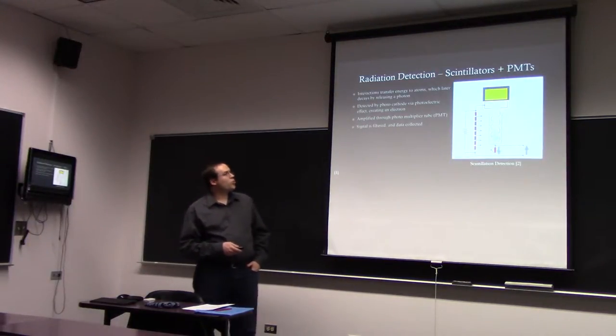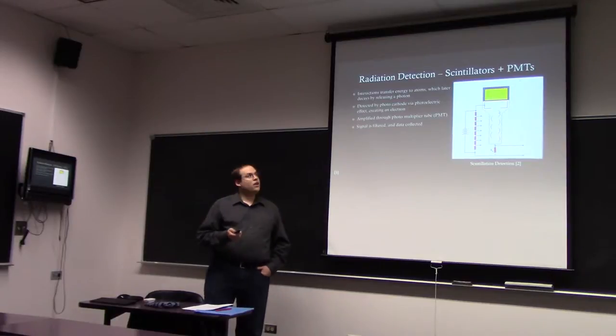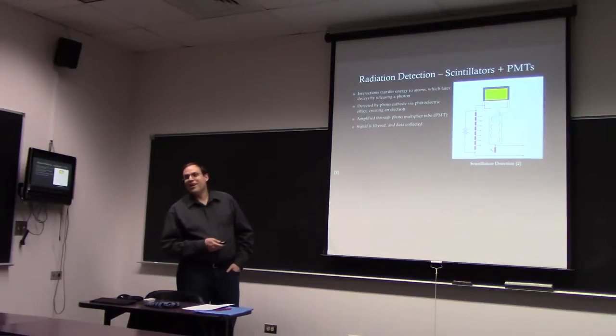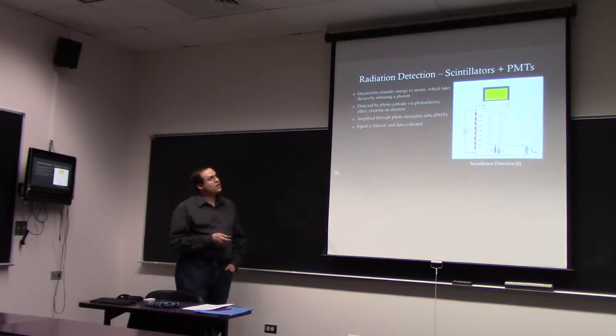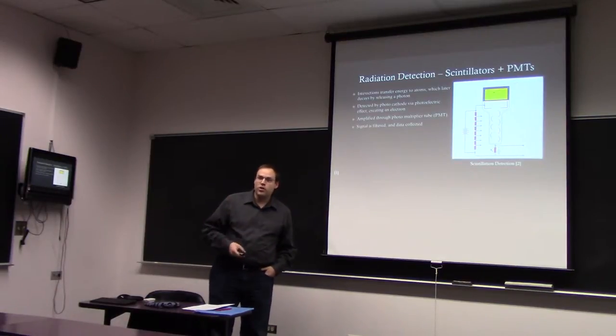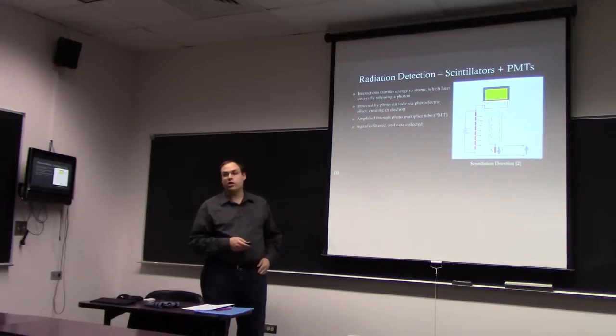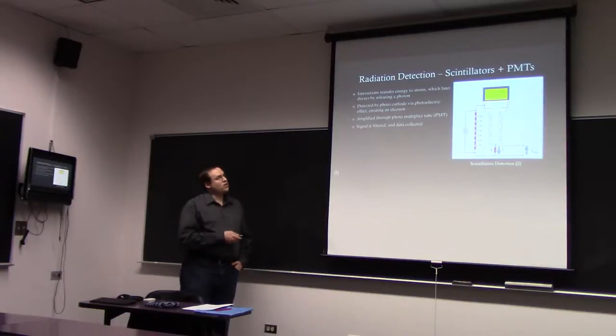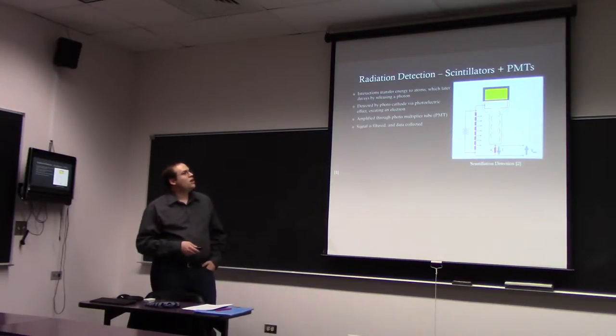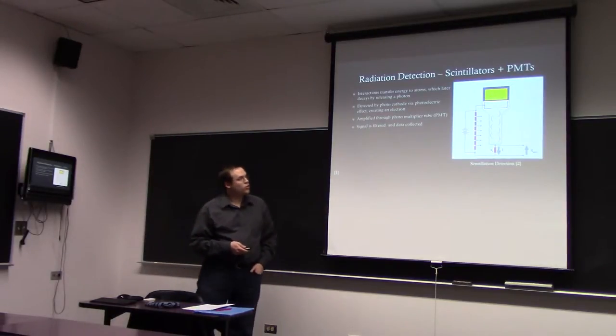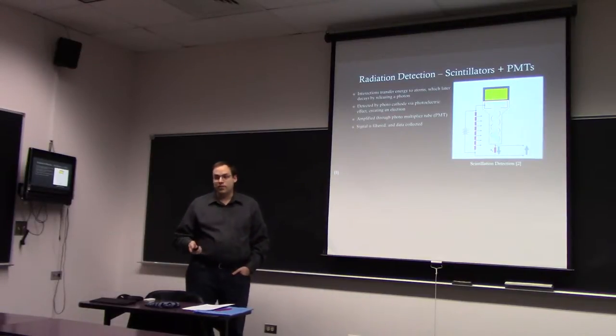So, one common way of detecting radiation is with scintillators. A scintillator is basically a block of yellow material that when a particle of radiation enters, it excites the yellow atoms, which then, when they fall down from their excited state, release a photon, typically at lower energy than the particle that you make. This lower energy gamma is then detected by a photocathode via the photoelectric effect, which then emits an electron, which propagates through a photomultiplier tube, or PMT, in order to be detected on the other side.